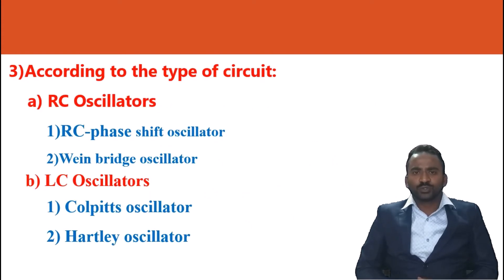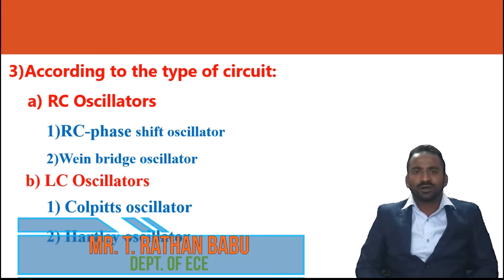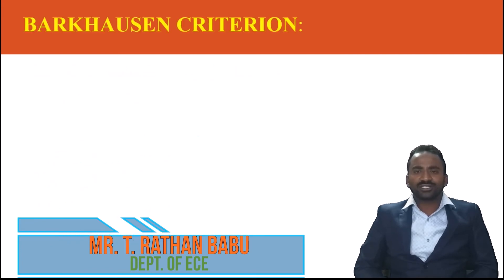According to the type of circuit, an oscillator is classified into two types: one is the LC oscillator and the second is the RC oscillator. An LC oscillator is designed with the help of an inductor and capacitor, and is further classified into two types: the Hartley oscillator and the Colpitts oscillator. An RC oscillator is designed with the help of basic elements — a resistor and capacitor — and is further classified into two types: the RC phase shift oscillator and the Wien bridge oscillator.